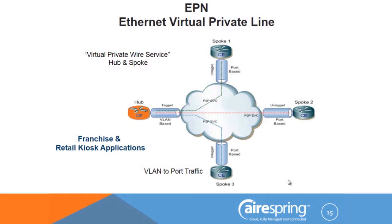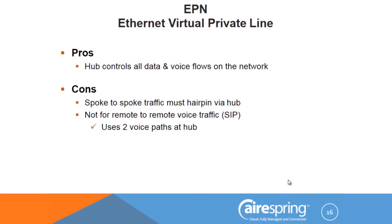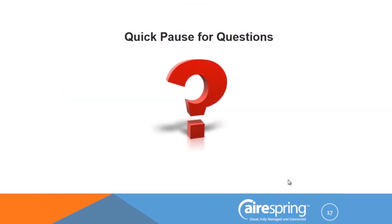Franchises work this way as well — franchise retail locations all come back to some software service at the hub. They very rarely talk to or do anything with each other. So if you have an application where remotes share hub resources but don't interact with each other, the hub-and-spoke EVPL is the way to go. EVPL pros: the hub controls all data and voice flows in and out. The cons: all traffic must go through the hairpin of the hub. If it's voice, you don't want to use up two voice paths at the hub for one voice call — so EVPL is not ideal for VoIP between spokes.